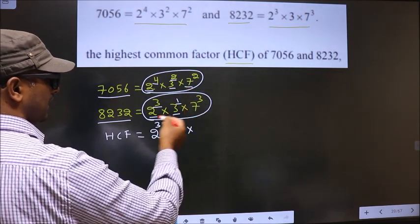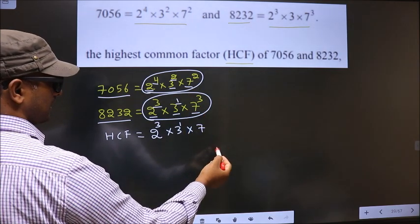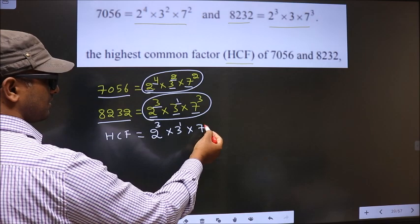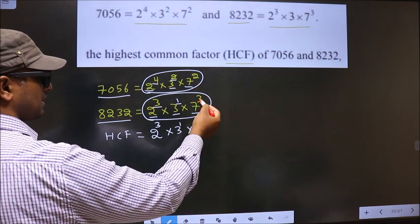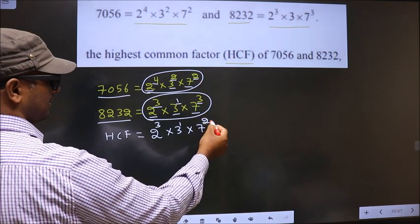Next number is 7. Do we have 7 here? Yes. So here also you write 7. What power will this 7 take? It will take the smaller of both powers. Smaller of 3 and 2 is 2, so it will take 2.